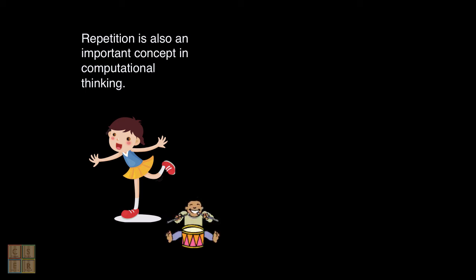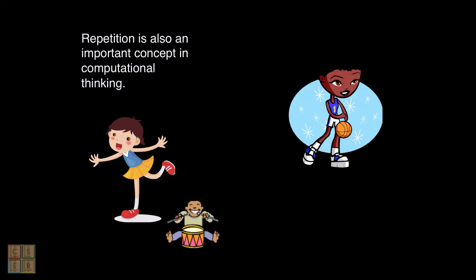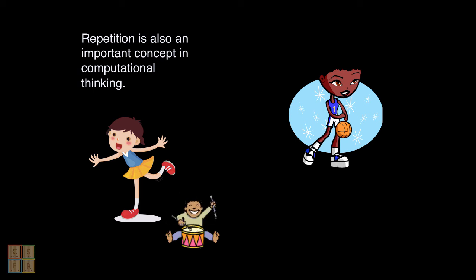A more advanced setting might involve exploring repetition in the development of a game. For example, students could explore repetition in games with the intention to create one at the end of the unit. The teacher could introduce repetition by having students play a game such as basketball. At the end of the lesson, ask students questions like: how did you know when to start in the centre again? How did you know when to switch from offence to defence? Students could write out these rules as an algorithm and then come up with their own sport games with their own algorithm involving both repetition and decision making.